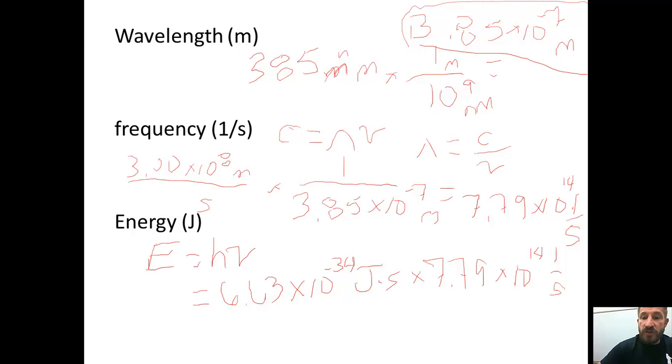You can see when you do this, like above, we notice that meters would cancel. We end up with 1 over seconds. Above, we notice that nanometers canceled and we ended up with meters. Here we're going to notice that these seconds are going to cancel, and you're going to end up with joules.